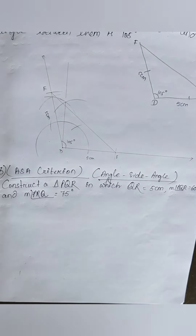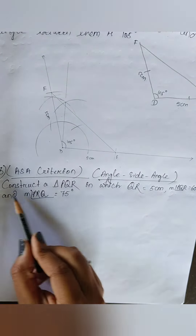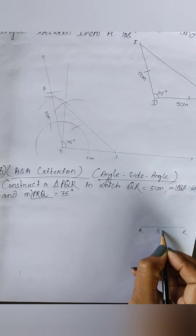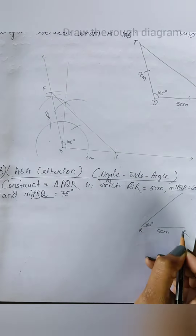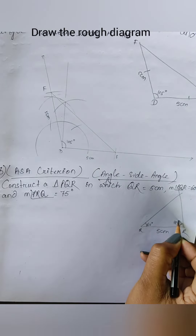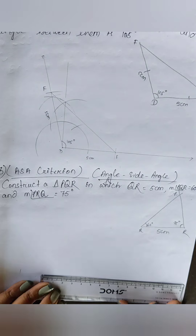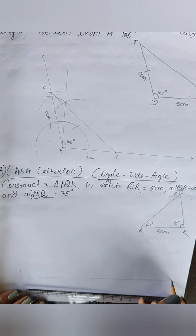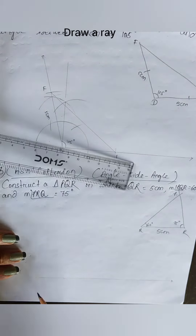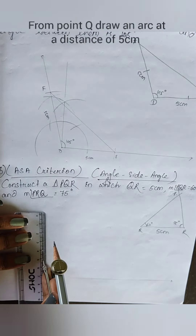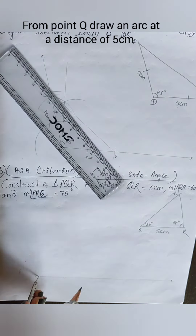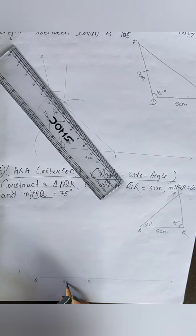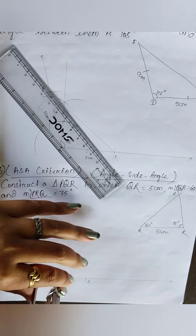The next criterion is ASA — angle-side-angle. Here QR = 5 centimeters, angle Q = 60 degrees, angle R = 75 degrees. First draw QR = 5 centimeters, then from angle Q draw 60 degrees and from angle R draw 75 degrees — where they meet will be point P. Draw the ray, name point Q, draw 5 centimeters to get point R, name them and write the side value. Now from angle Q draw 60 degrees.